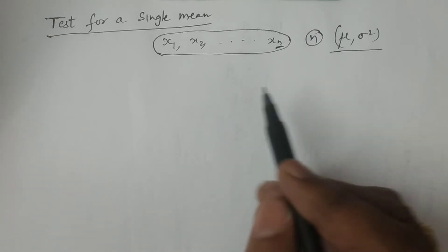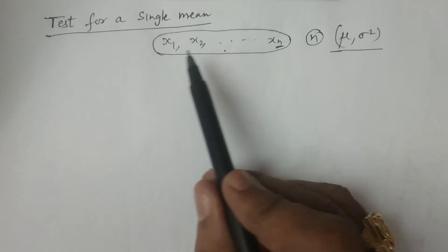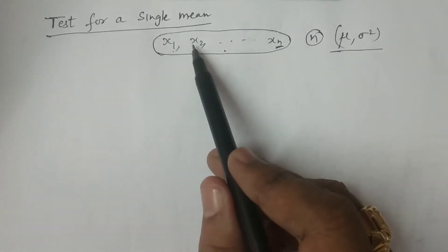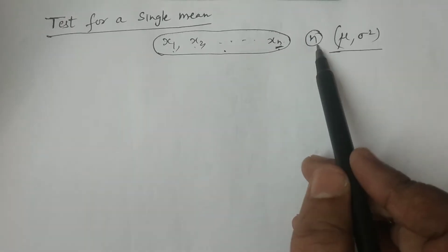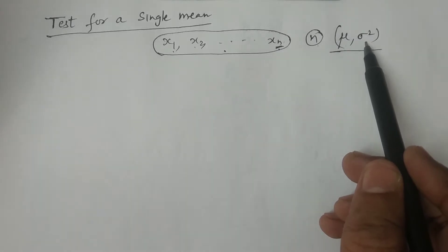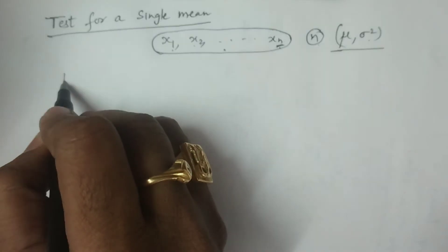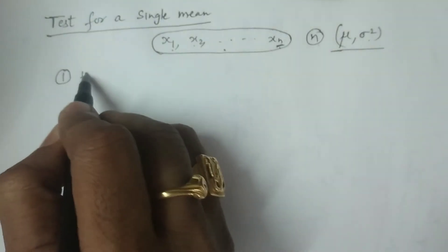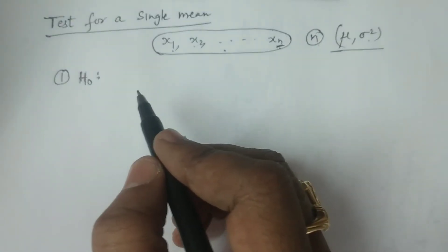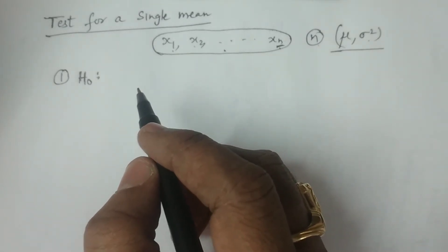To repeat: draw a random sample from the normal population — that is, the sample is x1, x2, and so on, xn, a random sample of size n from the normal population with mean mu and variance sigma square. These are the general assumptions we consider. There are five important points, but alpha is fixed in advance, so that is a fixed point we are not considering to explain here.